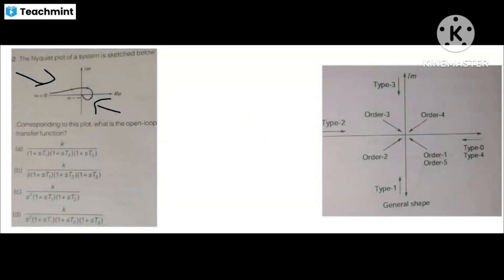What is the open loop transfer function of the system? In the plot, find the corresponding open loop transfer function. First, we have to know that the Nyquist plot always starts from 0 and ends at infinity. If we look at the plot, it starts at 0 and ends at infinity. Now we have a shortcut method to find out — by comparing the quadrant chart and the Nyquist plot, we can easily find out the answer.